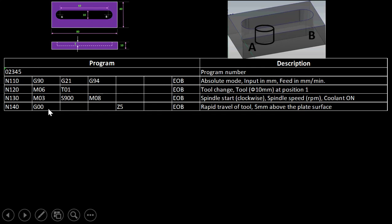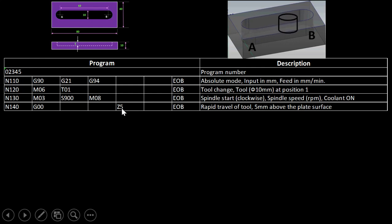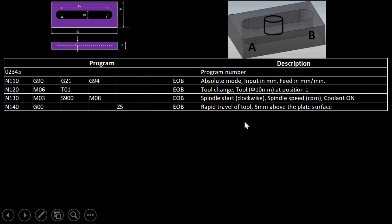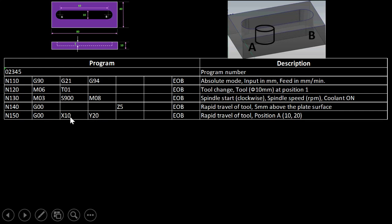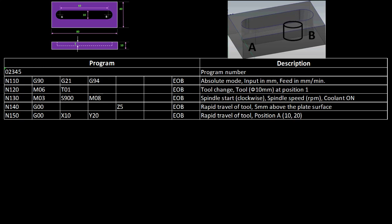G00 Z5 performs a rapid travel to bring the tool 5 mm above the work surface. Then G00 X10 Y20 moves the tool rapidly to position A, which is at coordinates X10, Y20. The cutter is now at position A and 5 mm above the work surface. Cutting has not yet started.